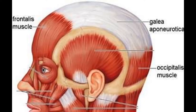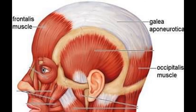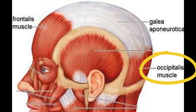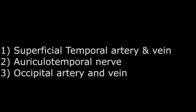On the frontal bone you've got the frontalis muscle, on the parietal bone you've got the galea aponeurotica or aponeurosis, and on the occipital bone you've got the occipital muscle. Some neurovascular bundles present in the frontal parietal occipital region include the superficial temporal artery and vein and the auriculotemporal nerve.